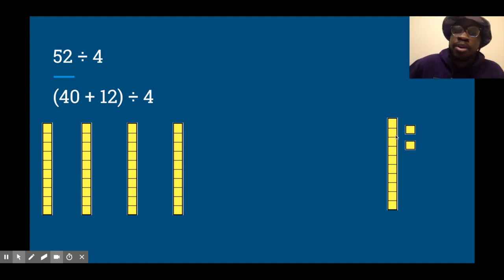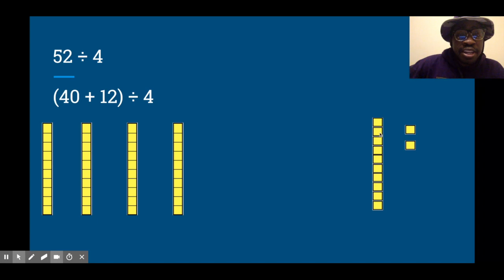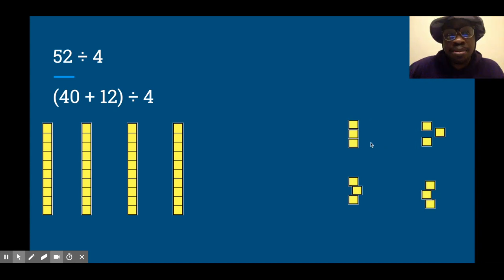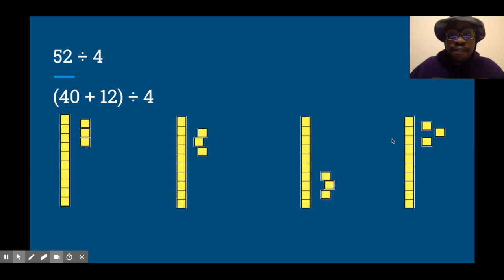And then, same thing over here, we have 12. But wait a minute, this is a 10, I can't divide it like this, so I'm going to regroup it into ones. Alright, now that I have 12 ones, 12 divided by 4—I know that already is 3 because 3 times 4 is 12. So I got 40 divided by 4 is 10, 12 divided by 4 is 3. Put them together, we have 4 groups of 13. 52 divided by 4 is 13. What about that!